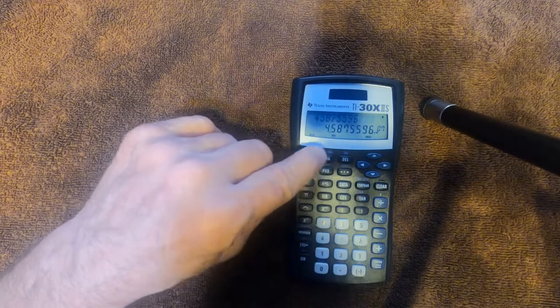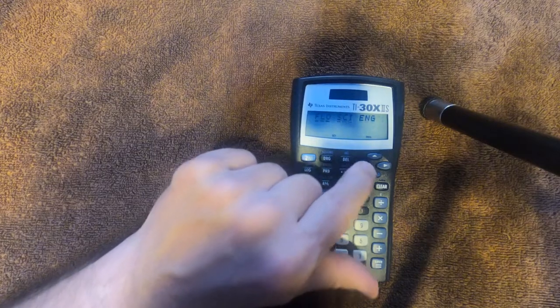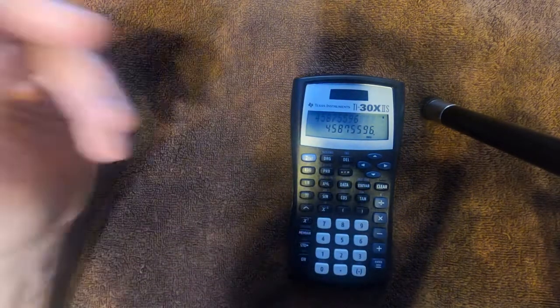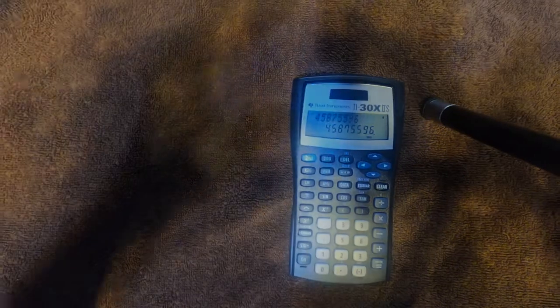To go back, just go second, psi slash ENG, arrow over to where FLO for floating point is underlined, press enter, and it's in decimal notation. So there you go.